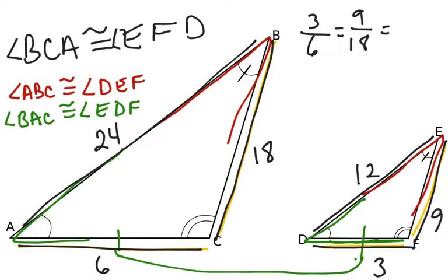and equivalent to ED, which is 12, and BA, which is 24. And I can see that when I reduce each of these fractions, I get 1 half each time.